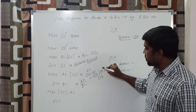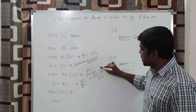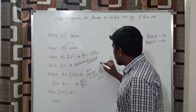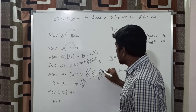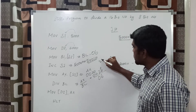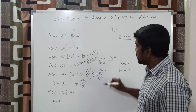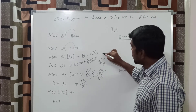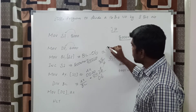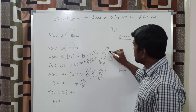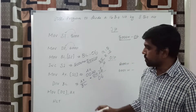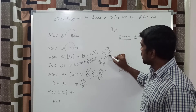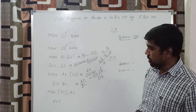Before dividing, first you convert the hexadecimal value into decimal. The hexadecimal value of 20h is decimal 32. So 32 divided by 6: the quotient is 5 and the remainder is 2. After the division operation, you get two results — the quotient is 05h and the remainder is 02h.